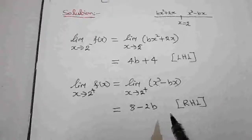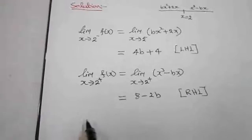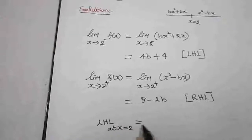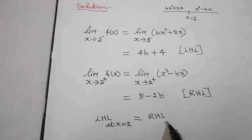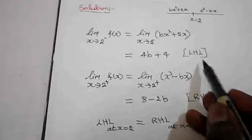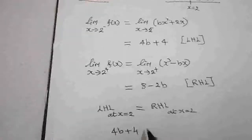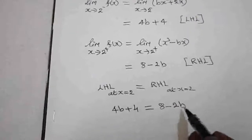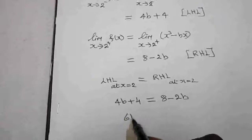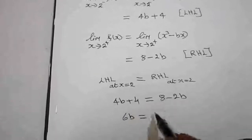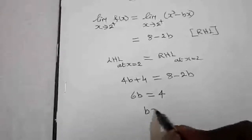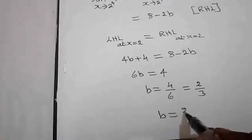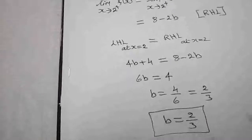From the definition of a continuous function, the left-hand limit equals the right-hand limit at x equals 2. So 4b plus 4 equals 8 minus 2b. Bringing 2b to the left side: 4b plus 2b gives 6b. Taking 4 to the right side: 8 minus 4 equals 4. Therefore b equals 4 divided by 6, which simplifies to 2 over 3.